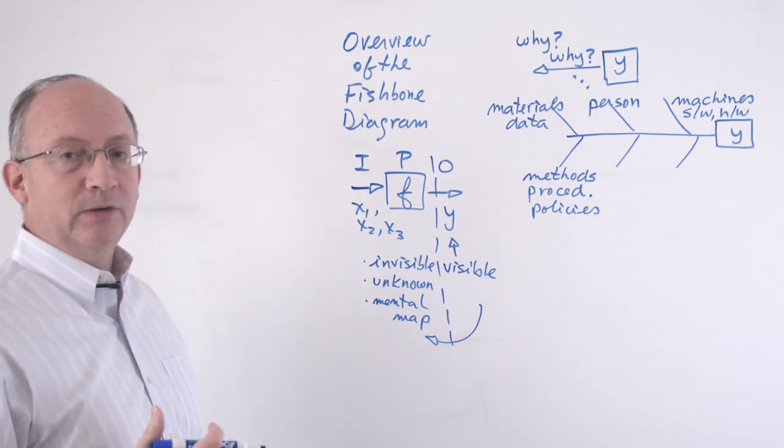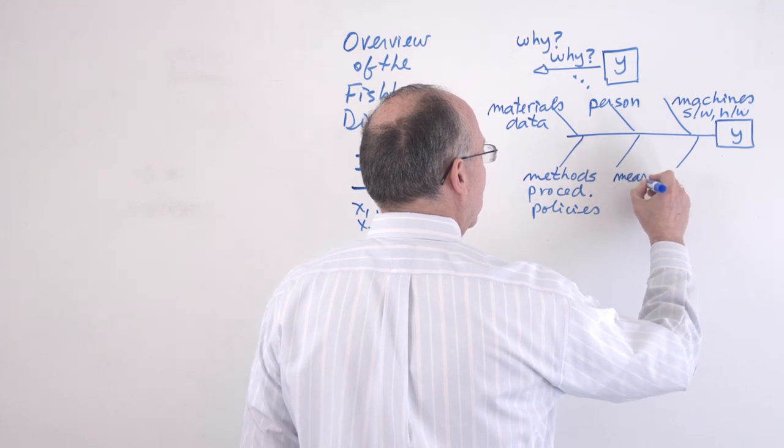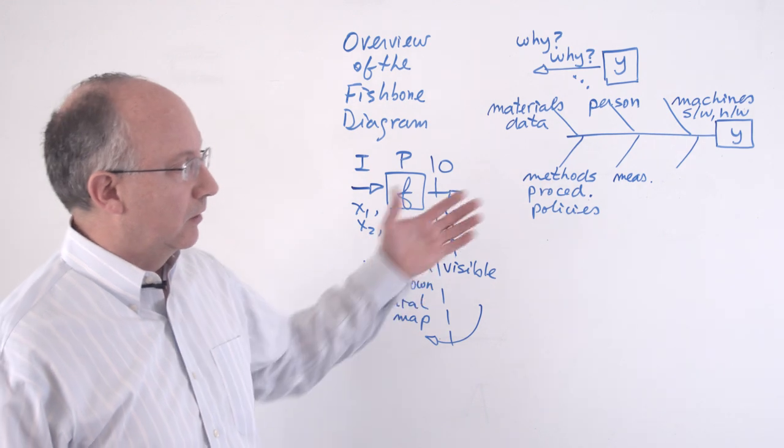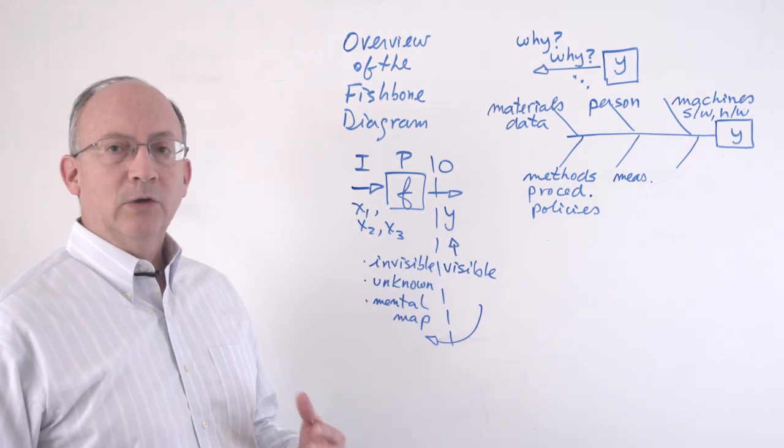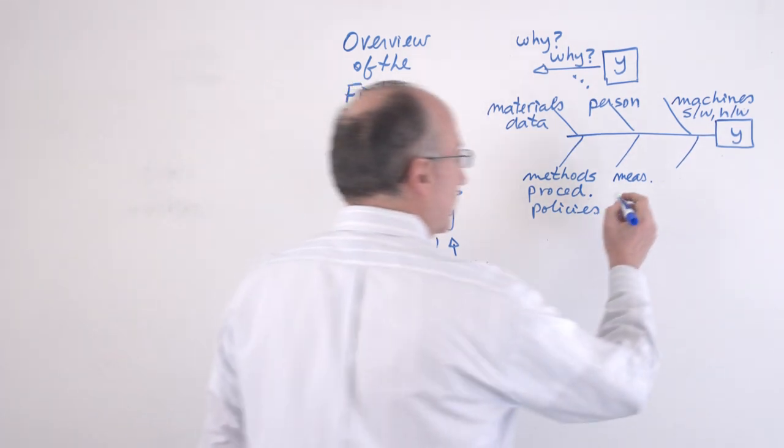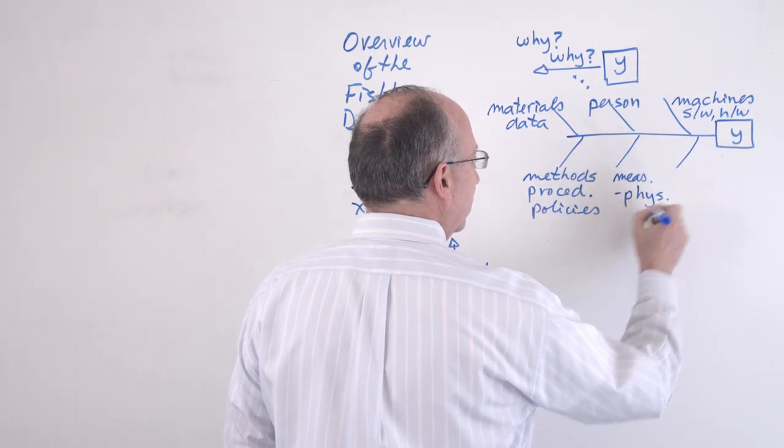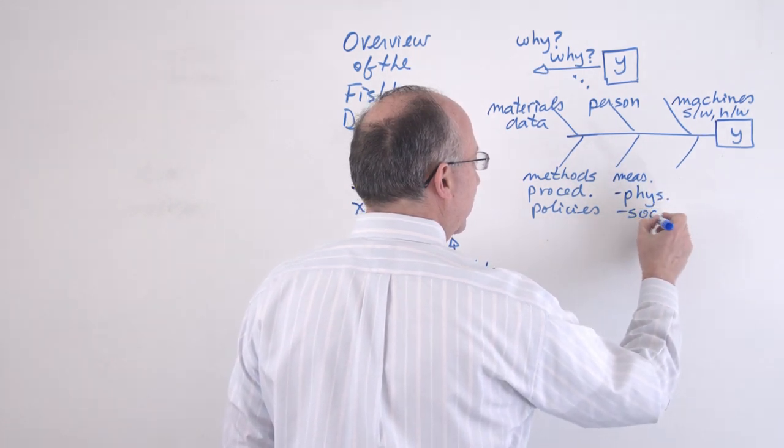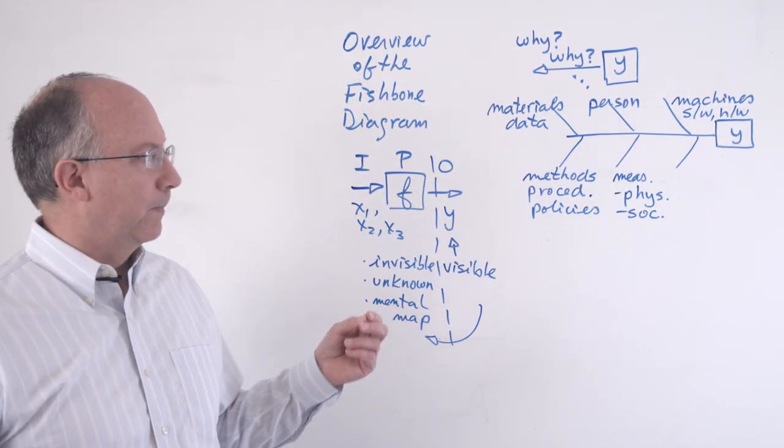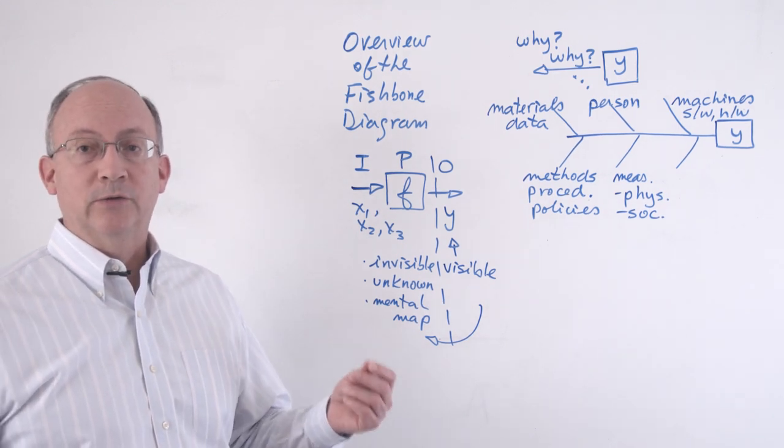In addition to the methods, procedures, policies, we may also have to think about how things are measured. So measurements are also going to be an important characteristic, an important ingredient of the system of causes. Not only measurements of the physical world, which naturally they will be part of this, but also measurements of the social environment, as in how are people measured in their performance and what type of behaviors this is going to lead to.